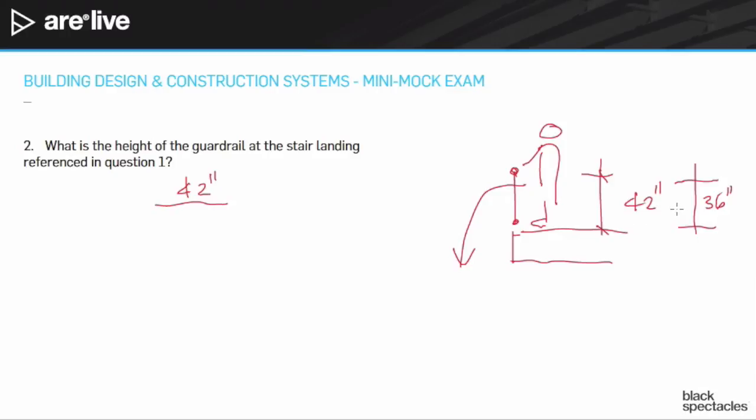42 is much more typical and IBC, which is what the exam is based on, is always going to be using that IBC. So let's think about a couple of other issues while we're talking about it. So this is for a guardrail. What if this had said handrail? If that had said handrail instead of guardrail, this would be a very different question.